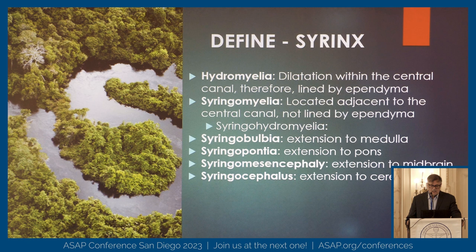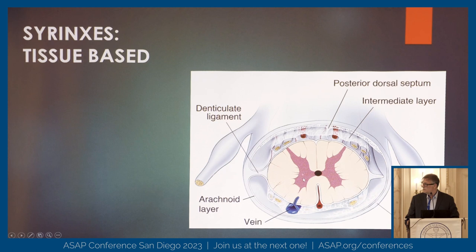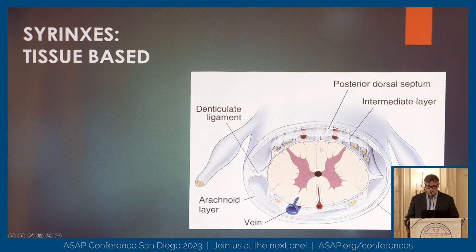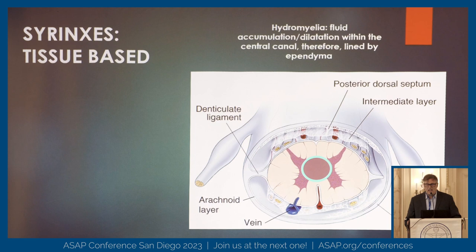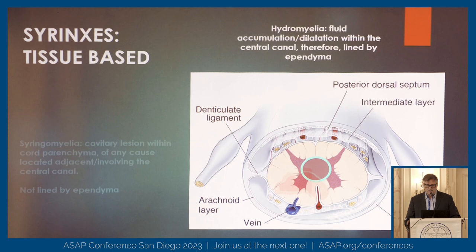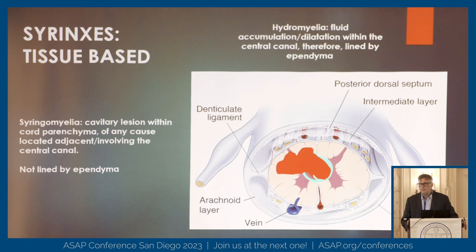Looking at this — this is the central canal. It's also interesting to notice all these little indentations and lines because that's where a lot of the blood supply to the cord comes from. This would be hydromyelia, where you essentially have an ependymal lining. And this would be syringomyelia, where the cavity can have partially an ependymal lining but also can stray into the parenchymal tissue of the cord.